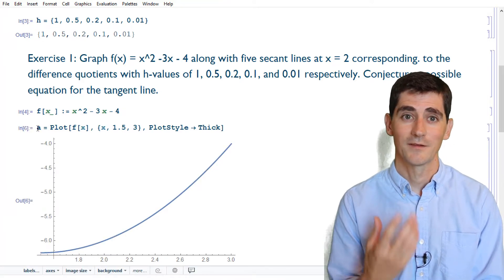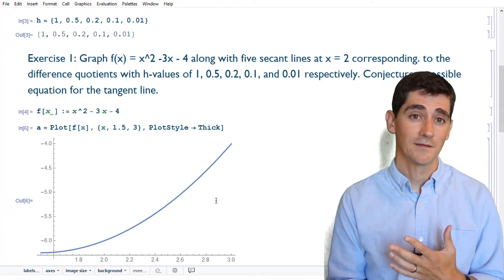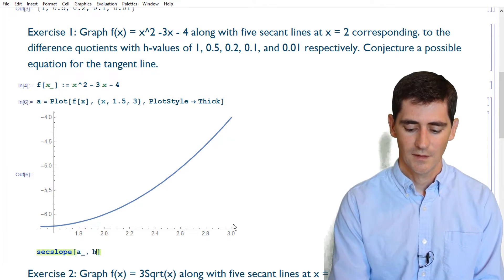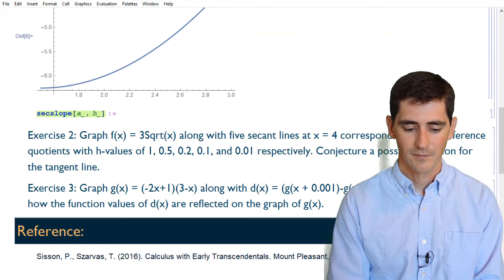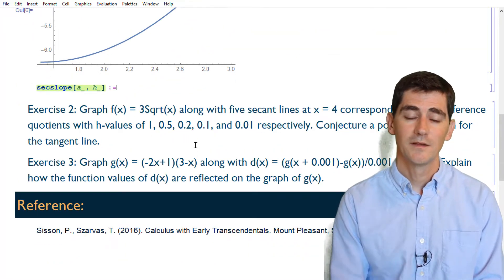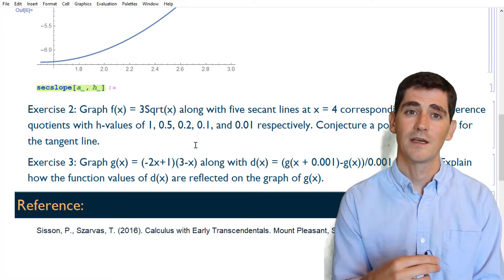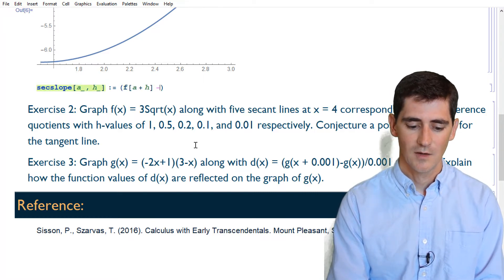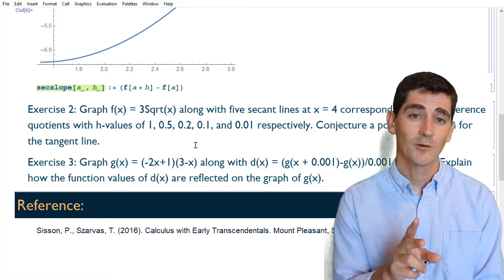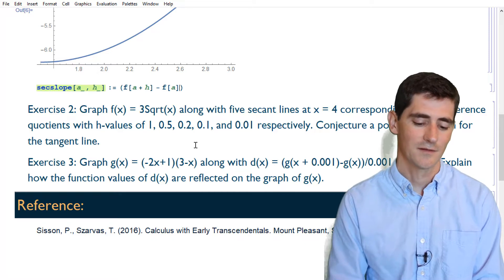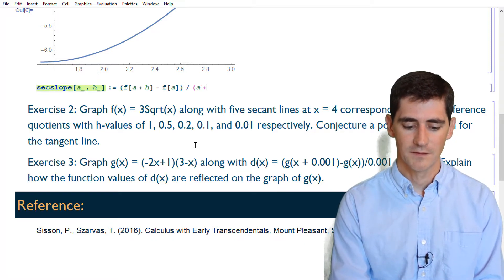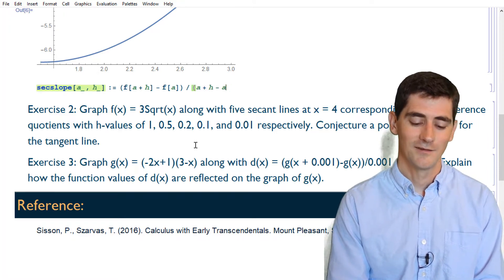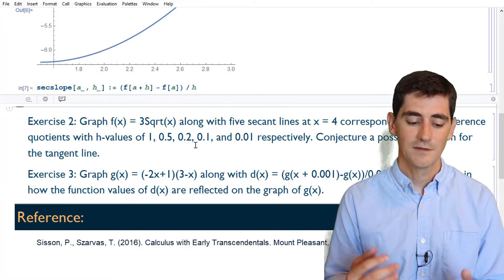Now we need to think about our secant lines. First, I'm going to define a secant slope function that has two inputs: an a value and an h value. This is simply the difference quotient — the slope formula is change in y over change in x. That looks like f(a + h) - f(a) divided by (a + h) - a. Since a - a = 0, the denominator simplifies to just h. There's my secant slope function.